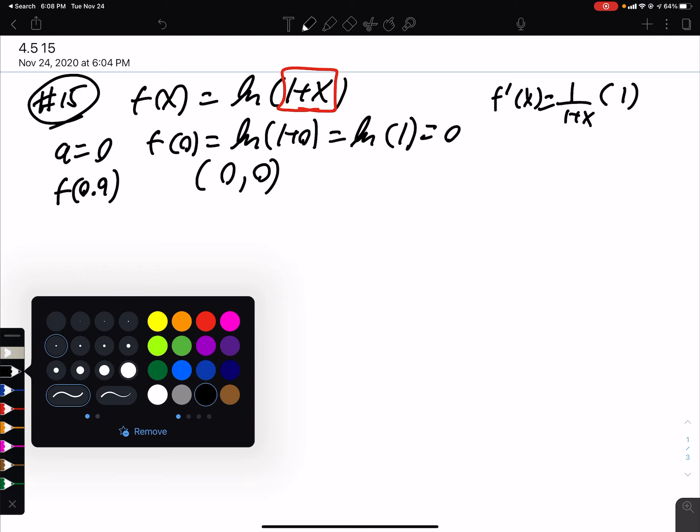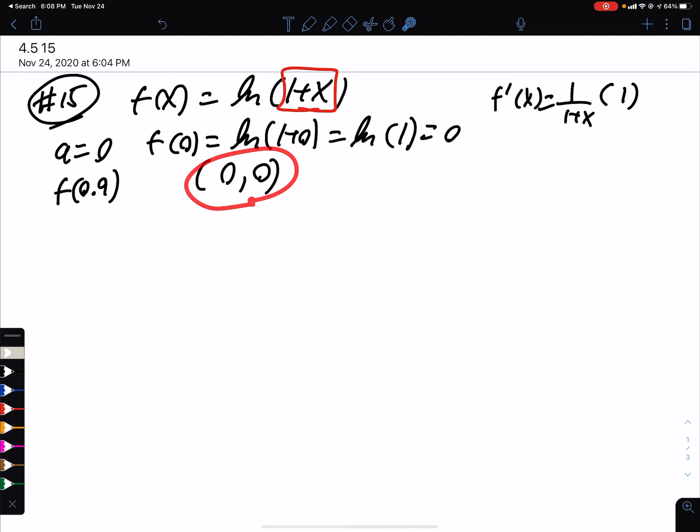So to find our slope at the point of tangency, which is 0, 0, we can find the derivative at 0, which is 1 over 1 plus 0, which is 1. So we have the slope. This gives us the slope of the tangent line.